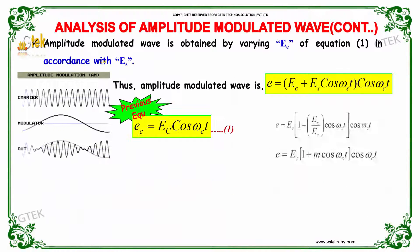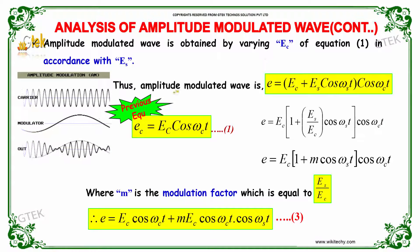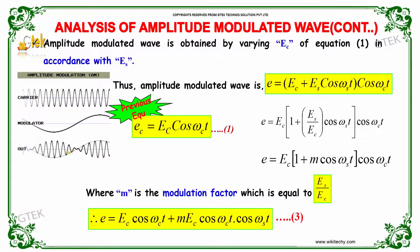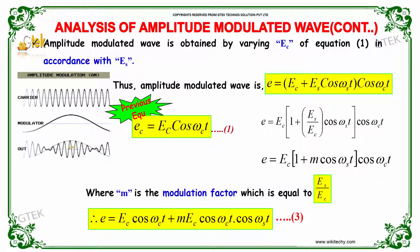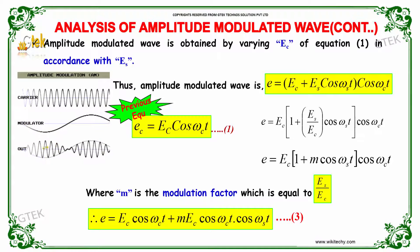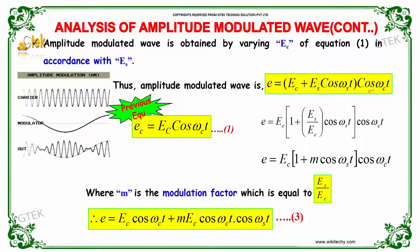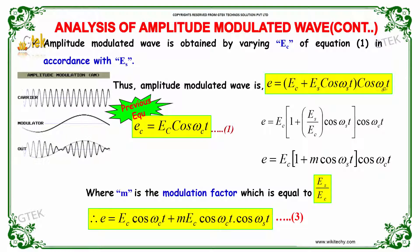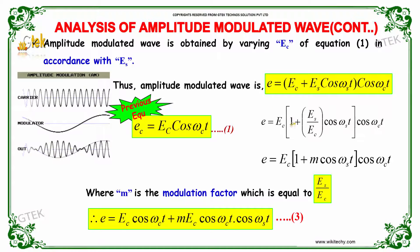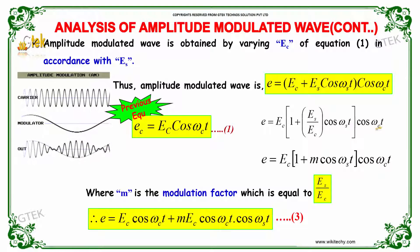The amplitude modulated wave is obtained by varying E_c in the carrier equation. This gives the output: E = (E_c + E_s · cos(ω_s · t)) · cos(ω_c · t). Taking E_c out, we get E_c · (1 + (E_s / E_c) · cos(ω_s · t)) · cos(ω_c · t).